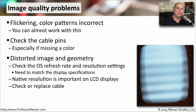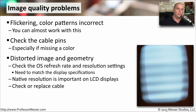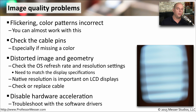If the image on the display is distorted or fuzzy, look at your operating system and make sure that the settings inside your OS match the capabilities of the monitor you're connecting to. Check the refresh rate and resolution settings — if at all possible, match the native resolution of the LCD display for the best possible image. You may also want to try checking or replacing the cable, especially if it's an analog connection. Another thing to try is disabling hardware acceleration so all processing is done in the software driver, which takes hardware out of the equation and helps you focus on how the drivers are working.